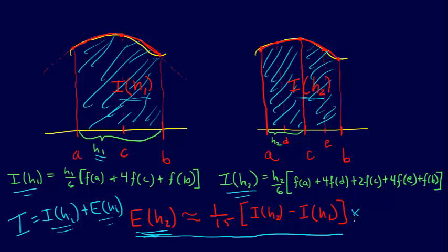And so we're estimating the error here as one-fifteenth IH2 minus IH1. And so this is the error estimate for doing the Simpson one-third rule, and then a multiple application Simpson one-third rule with half the step size.